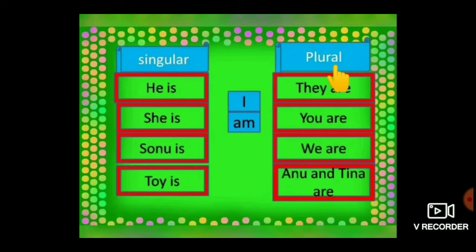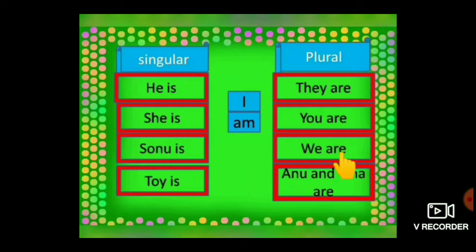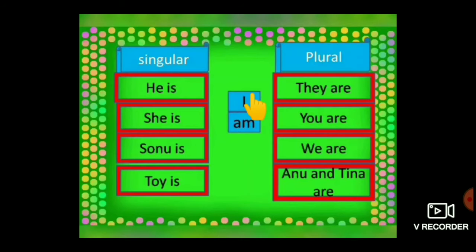Next, plural. Under the plural, we use: They are, You are, We are, Anu and Tina are. After a plural pronoun we use ARE — They are, You are, We are. And for plural naming words: Anu and Tina are. For AM: AM is used only for I — I am a girl or I am a boy.